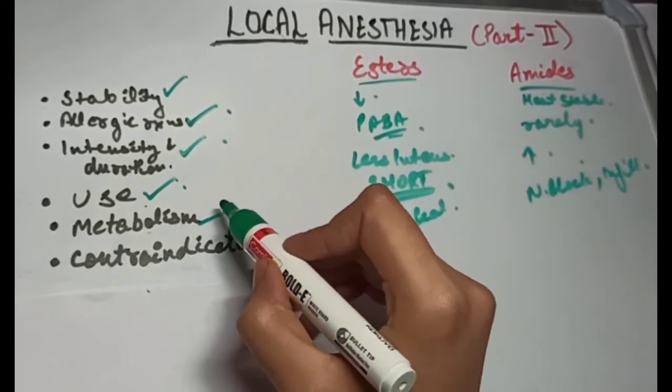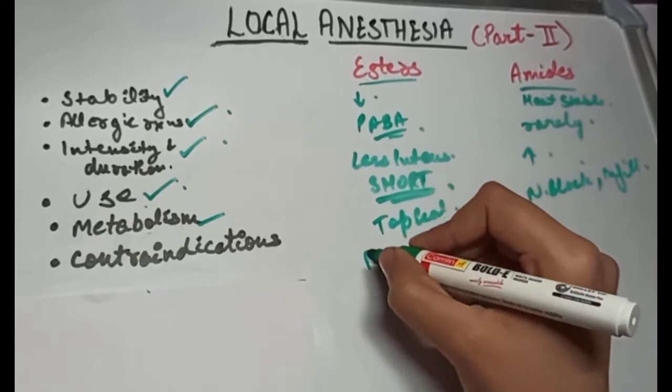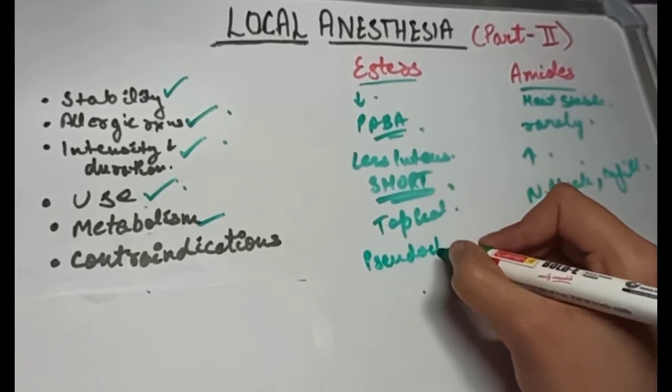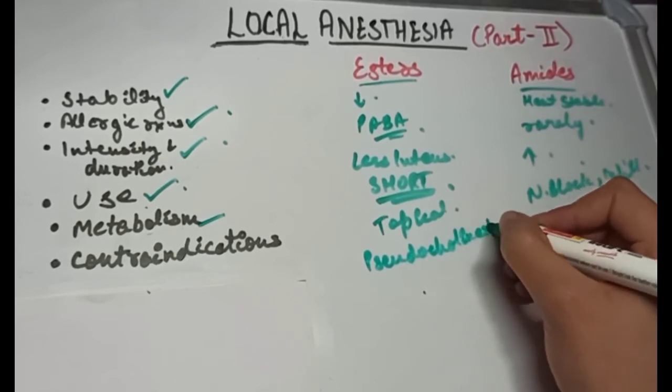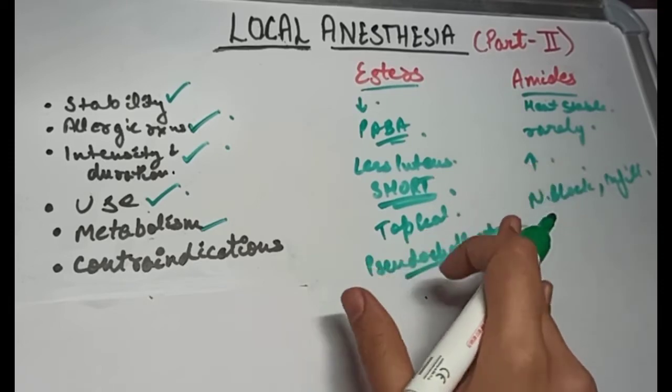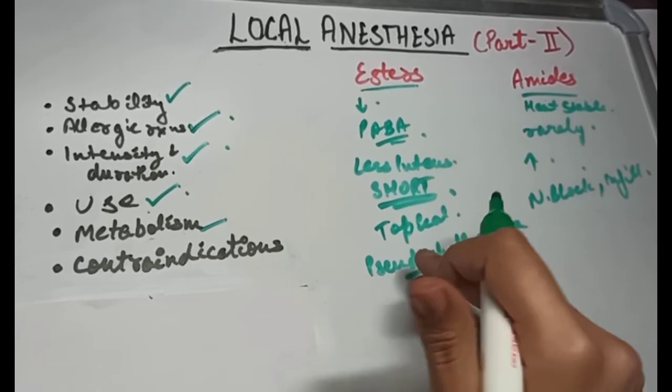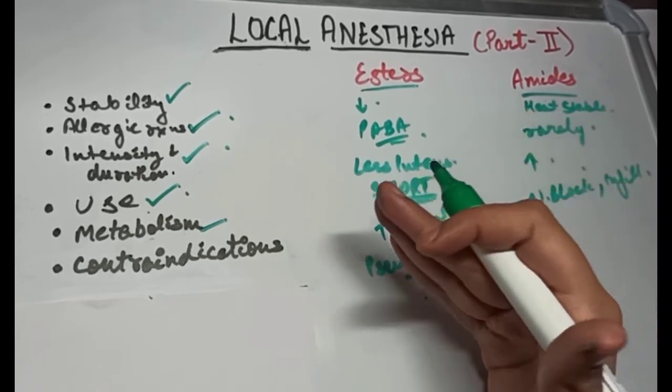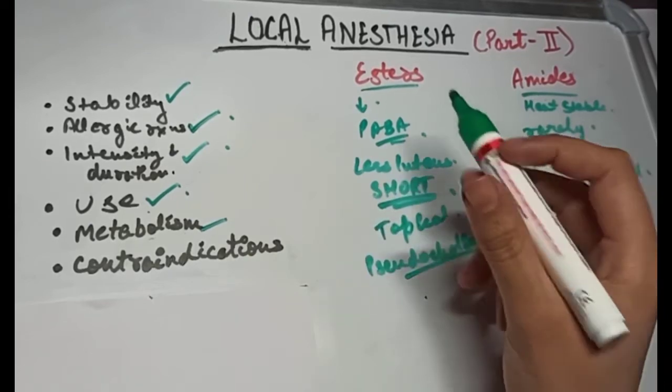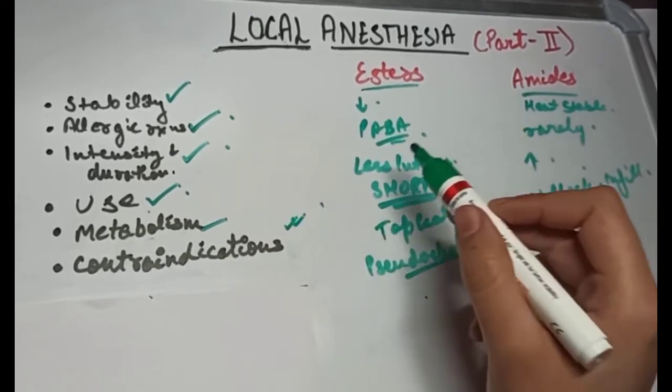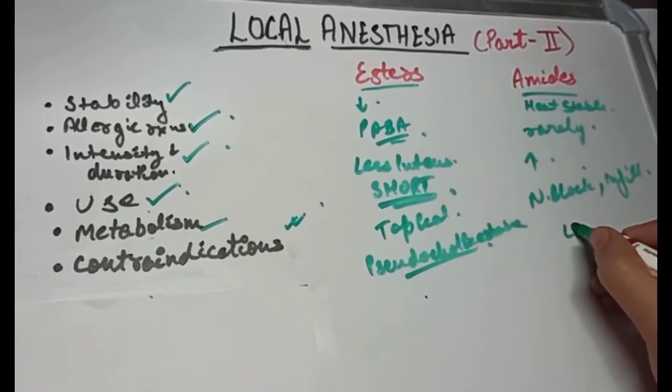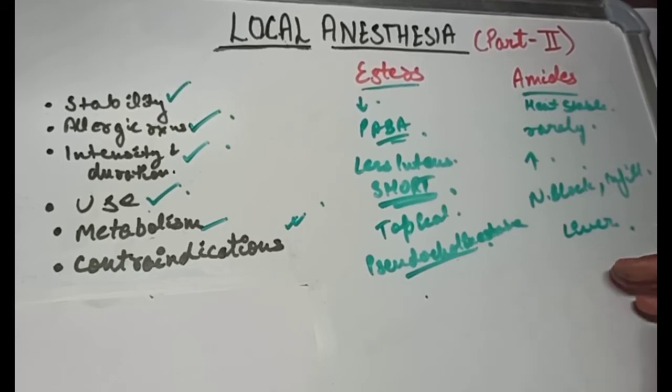Coming to metabolism, esters are metabolized by the enzyme pseudocholinesterase. In cases where patients have atypical pseudocholinesterase enzyme, metabolic degradation is slowed down. LA stays in the blood for a longer duration, leading to toxicity. In such cases, esters LA are contraindicated. Whereas in amides, since the breakdown takes place in the liver, in patients with poor liver function, amides can't be given because their level in the blood won't reduce and this will lead to toxicity. So esters LA are used in liver cirrhosis patients.